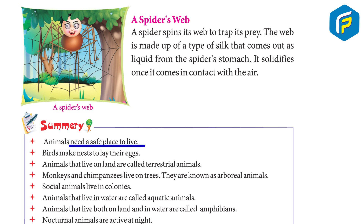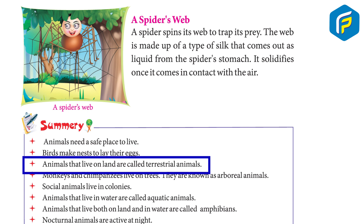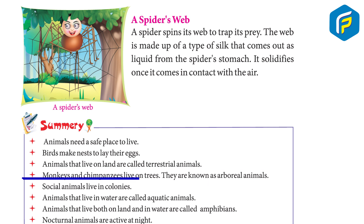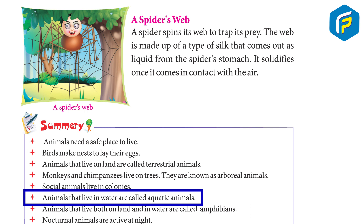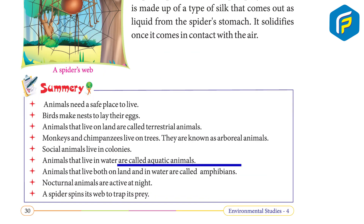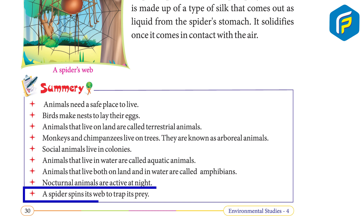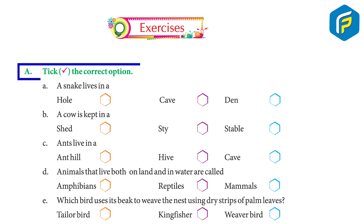Summary: Animals need a safe place to live. Birds make nests to lay their eggs. Animals that live on land are called terrestrial animals. Monkeys and chimpanzees live on trees and are known as arboreal animals. Social animals live in colonies. Animals that live in water are called aquatic animals. Animals that live both on land and in water are called amphibians. Nocturnal animals are active at night. A spider spins its web to trap its prey.